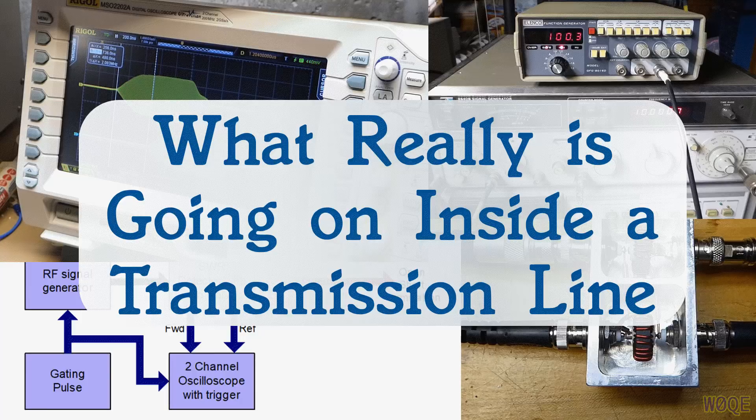I occasionally get comments such as, are you sure the coaxial cable works the way you mentioned? Or something like, how is it possible for a shorted or open piece of coax to look like 50 ohms when an RF signal is initially applied? This video is about what's going on inside a transmission line via an experiment you can do with limited test equipment.